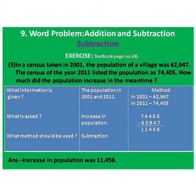Then make 3 columns. In the 1st column write questions. In the middle column write answers. And in the last column do the method. What information is given? Ka information di le le aahe? The population in 2001 and 2011. What is asked? Increase in population. Population madhe kiti vaad zha le le aahe? Increase manje vaad.